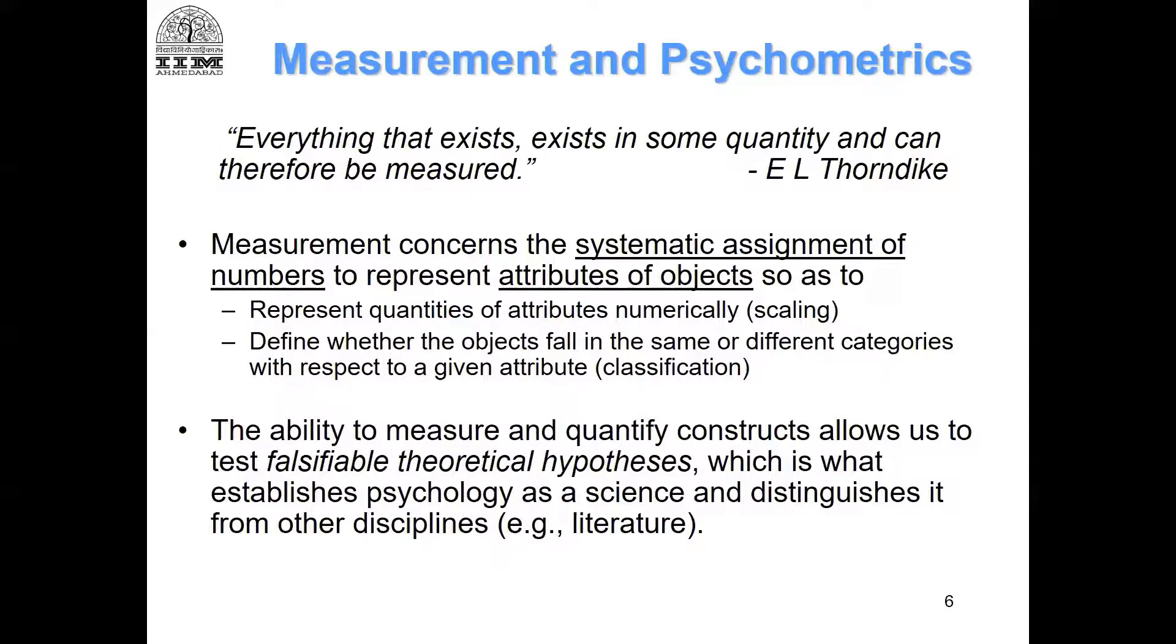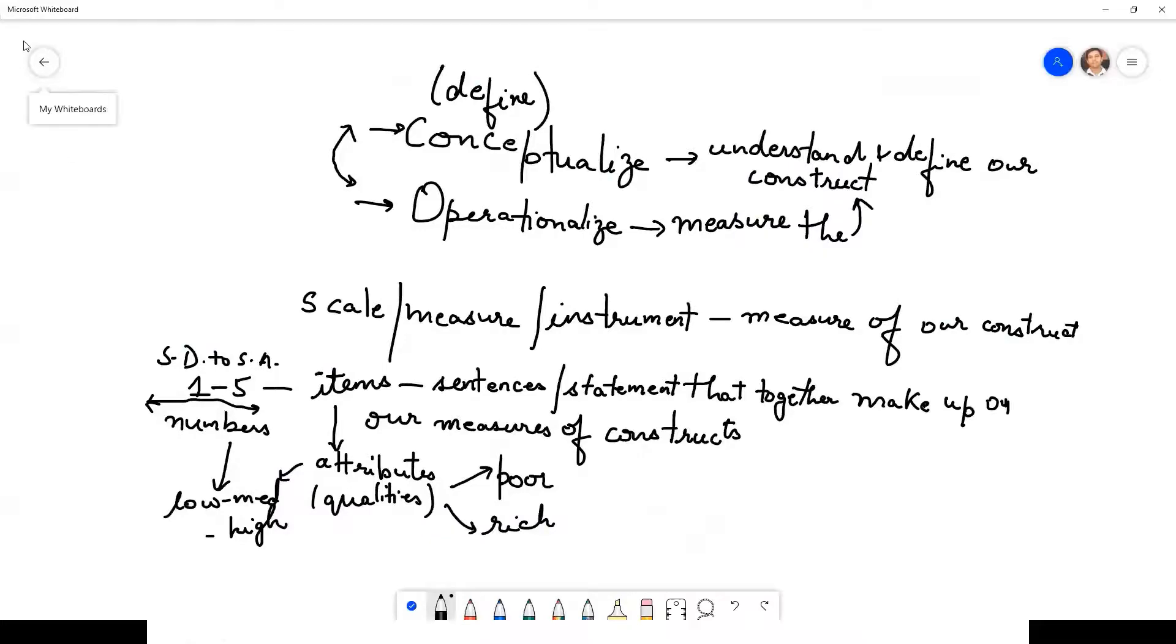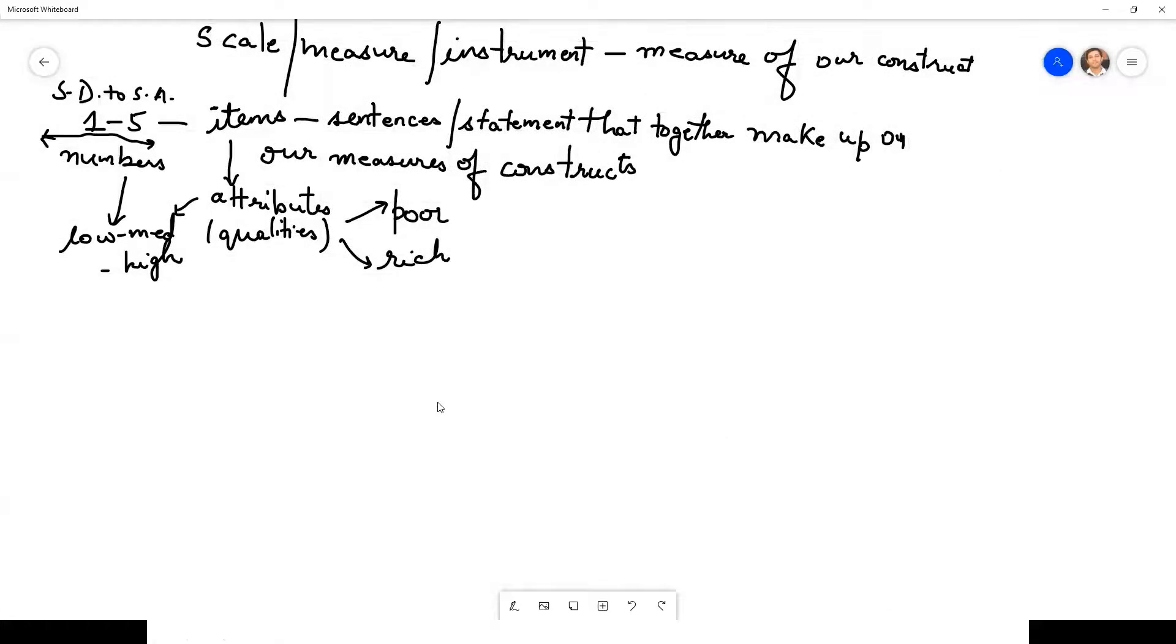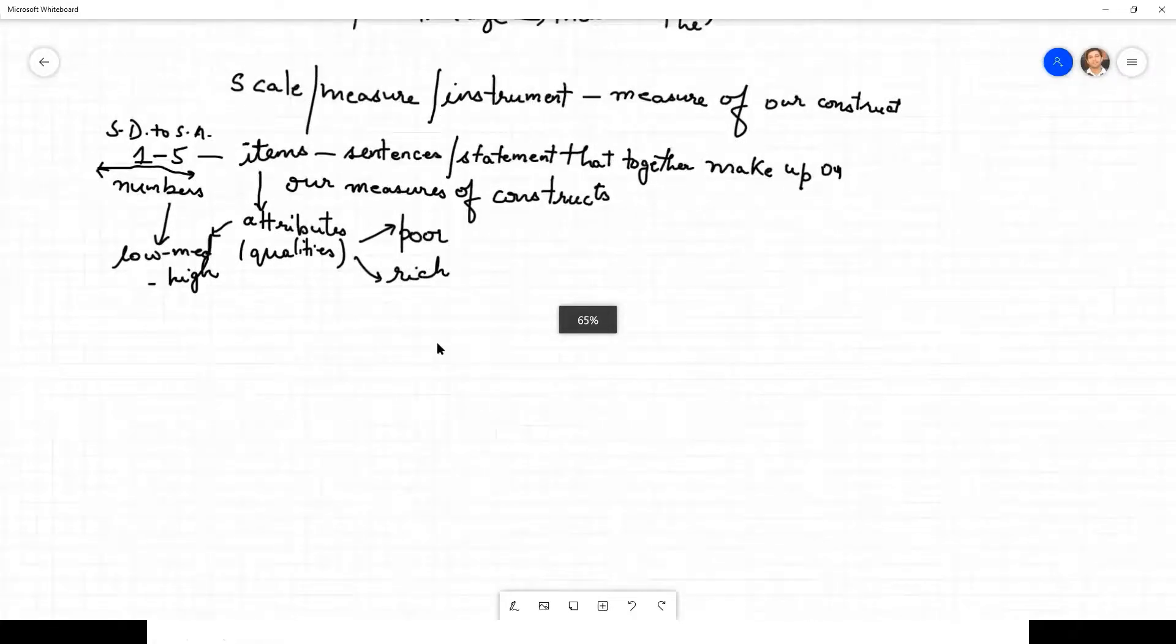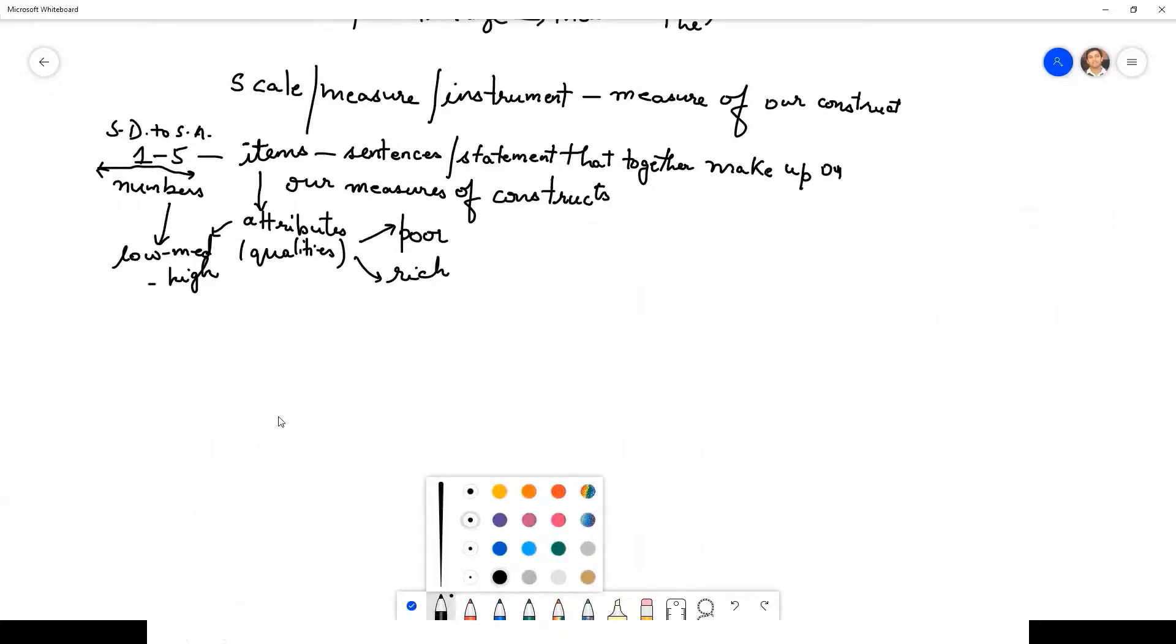The last thing is the ability to measure and quantify constructs allows us to test falsifiable theoretical hypotheses, which is what establishes psychology as a science - not just psychology, I would say management as a science - and distinguishes it from other theoretical disciplines. Let me mention what I mean by falsifiable hypothesis.